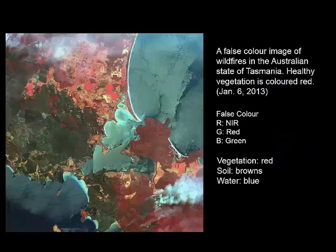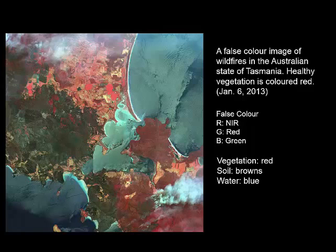To further emphasise those points, here is a false colour image from the bushfires in Tasmania in 2013. Healthy vegetation is displayed as red, and you can see the black areas where vegetation has been burnt. This really highlights the contrast between healthy vegetation and areas damaged by fire. Within the image you can also see areas of contrasting red — very healthy vegetation, perhaps with better access to water or better soils, or agricultural areas compared to native vegetation. The brighter, more vibrant reds and pinks indicate more actively growing areas of vegetation.